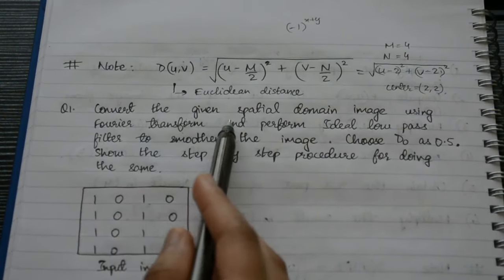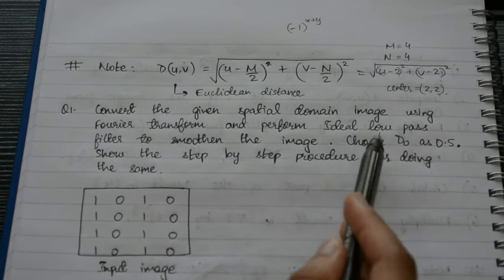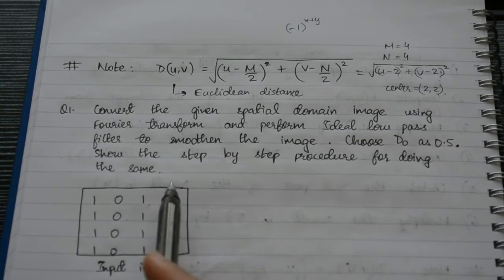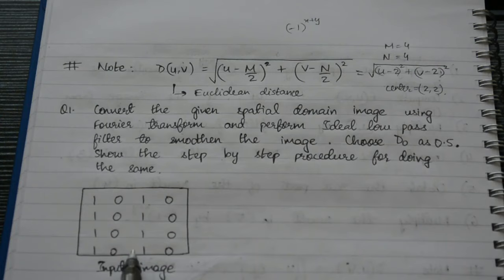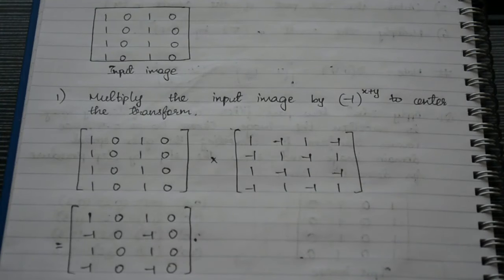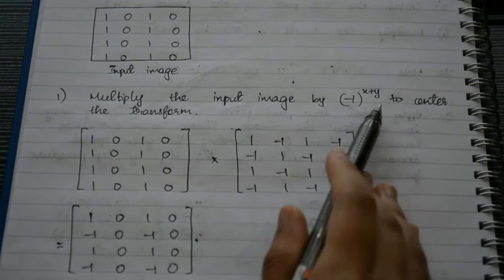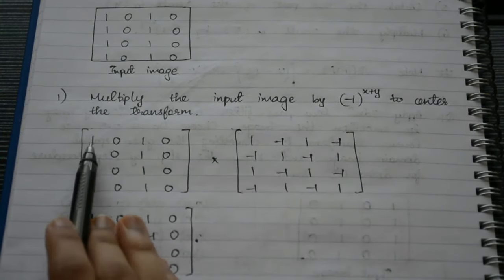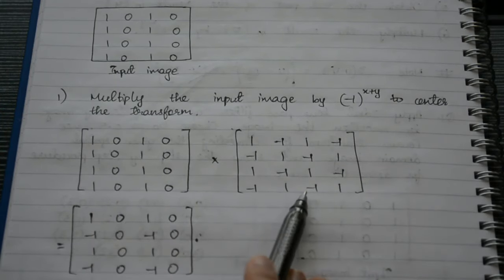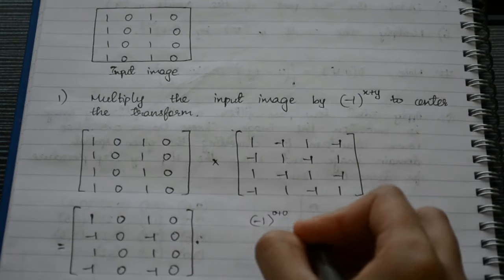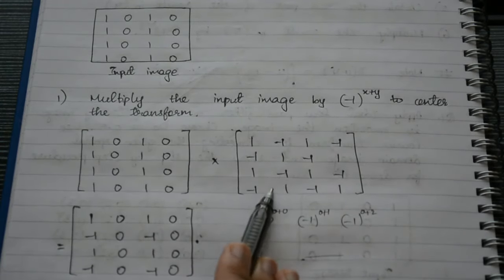Now let's look at a worked question: convert a given spatial domain image using Fourier transform and perform ideal low pass filtering to smooth the image, with D0 = 0.5. Step 1: multiply the input image by (−1)^(x+y). We calculate (−1)^(x+y) for each pixel — for example (−1)^(0+0), (−1)^(0+1), (−1)^(0+2), and so on — then do pixel-by-pixel multiplication with the input image to get the centered matrix.